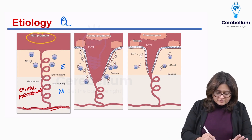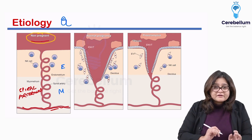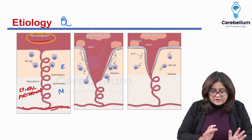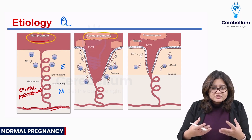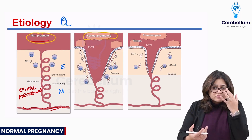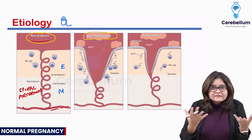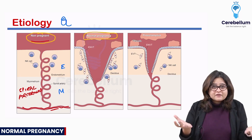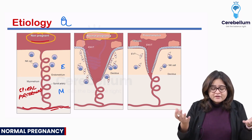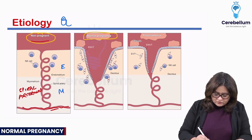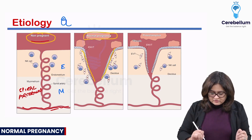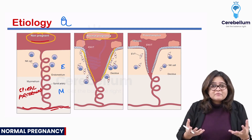This is how a normal non-pregnant vasculature would look like. The second diagram is of a normal pregnancy. The major change you can notice here is how dilated the spiral arteriole has become — a nice, big, huge dilatation of the spiral arterioles.